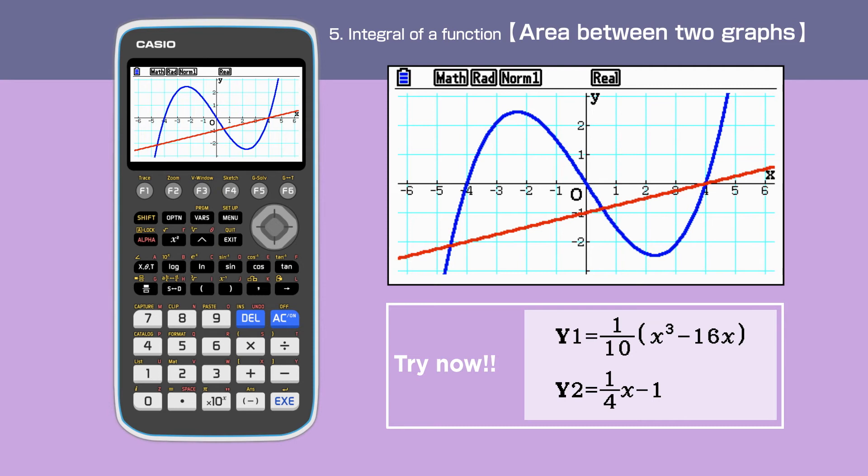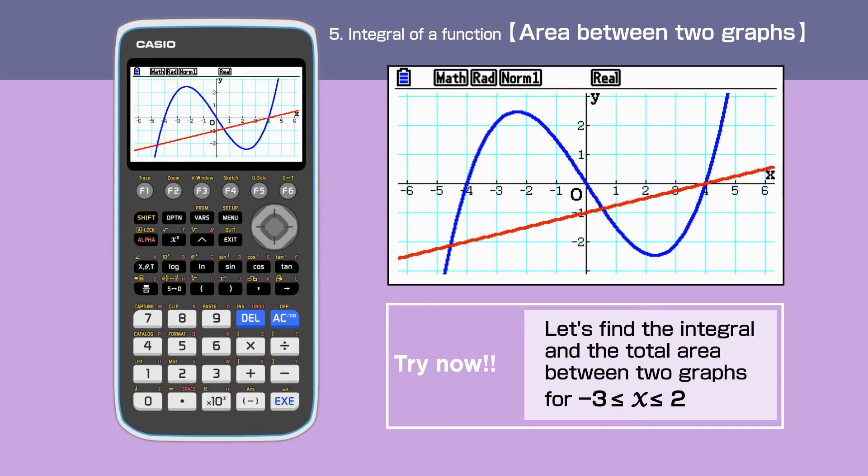We have a cubic and a straight line graph. This time, we are to find the area enclosed by these two functions for x bigger than minus 3 and less than 2.